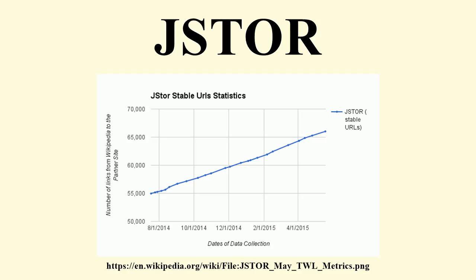JSTOR content is provided by more than 900 publishers. The database contains more than 1,900 journal titles in more than 50 disciplines. In addition to the main site, the JSTOR Labs group operates an open service that allows access to the contents of the archives for the purposes of corpus analysis at its Data for Research service. This site offers a search facility with graphical indication of the article coverage and loose integration into the main JSTOR site. Users may create focused sets of articles and then request a data set containing word and n-gram frequencies and basic metadata. They are notified when the data set is ready and may download it in either XML or CSV formats. The service does not offer full-text, although academics may request that from JSTOR, subject to a non-disclosure agreement.